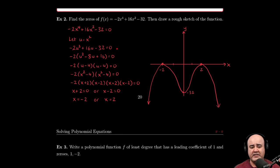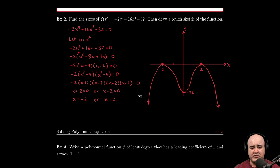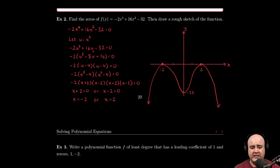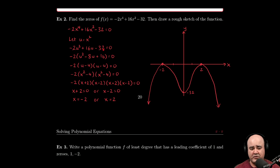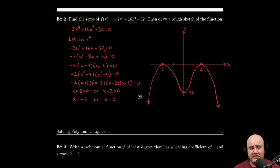And now we make the substitution. So x to the fourth gets replaced with u squared. x squared gets replaced with u. The negative 32 just comes along for the ride. There's no variables attached to it. So nothing changes there.